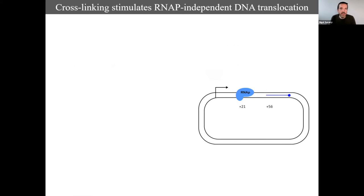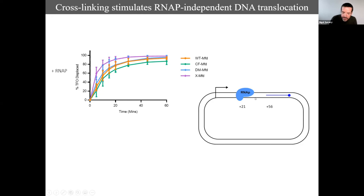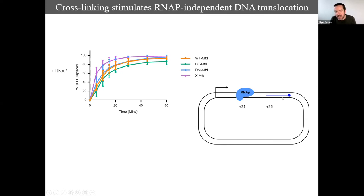Cross-linking doesn't abolish DNA binding activity either. MFD gives band-shift experiments on a 280-base-pair linear piece of DNA — the wild-type protein shifts in the presence of non-hydrolyzable ATP-gamma-S, and the cross-linked MFD can also bind DNA, possibly a little more weakly. Interestingly, the cross-linked protein actually stimulates RNA polymerase-independent DNA translocation, as shown using a triplex-forming oligonucleotide downstream of a stalled RNA polymerase.